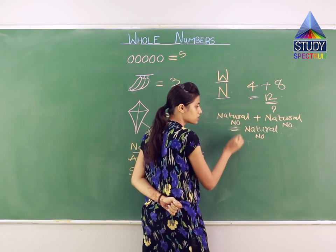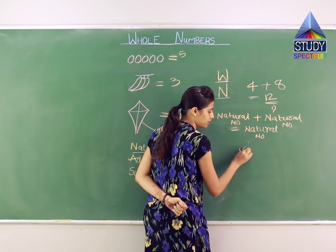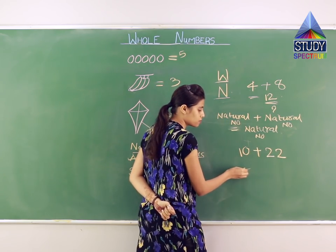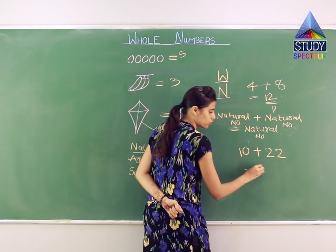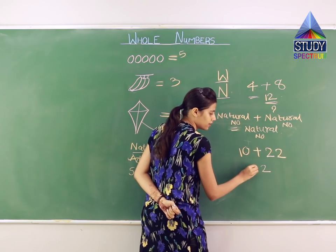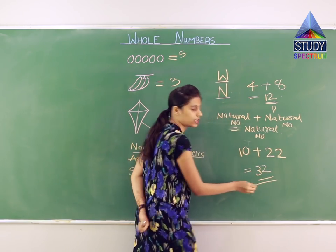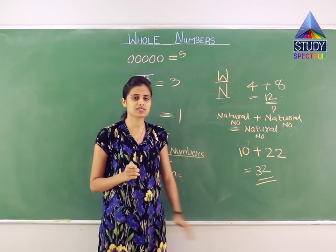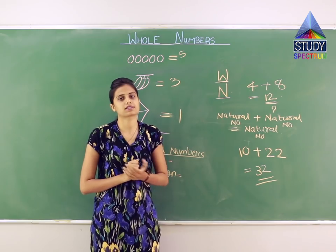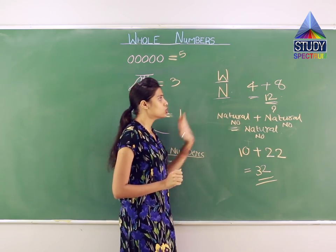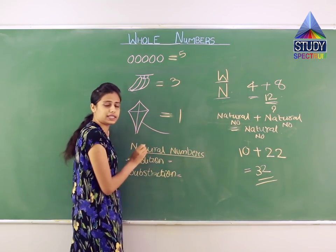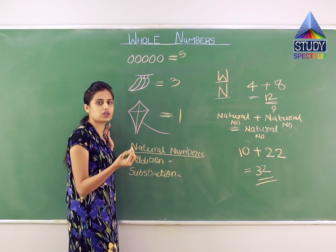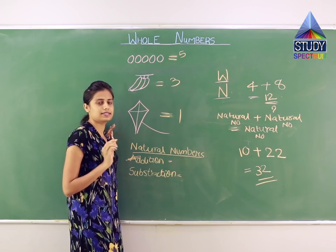Let us take another example. Suppose the first natural number is 10 and another is 22. The answer is 32. Does 32 come between 1 and infinity? Yes. So 32 is also a natural number. We are clear with the first property: addition of a natural number with another natural number equals a natural number.